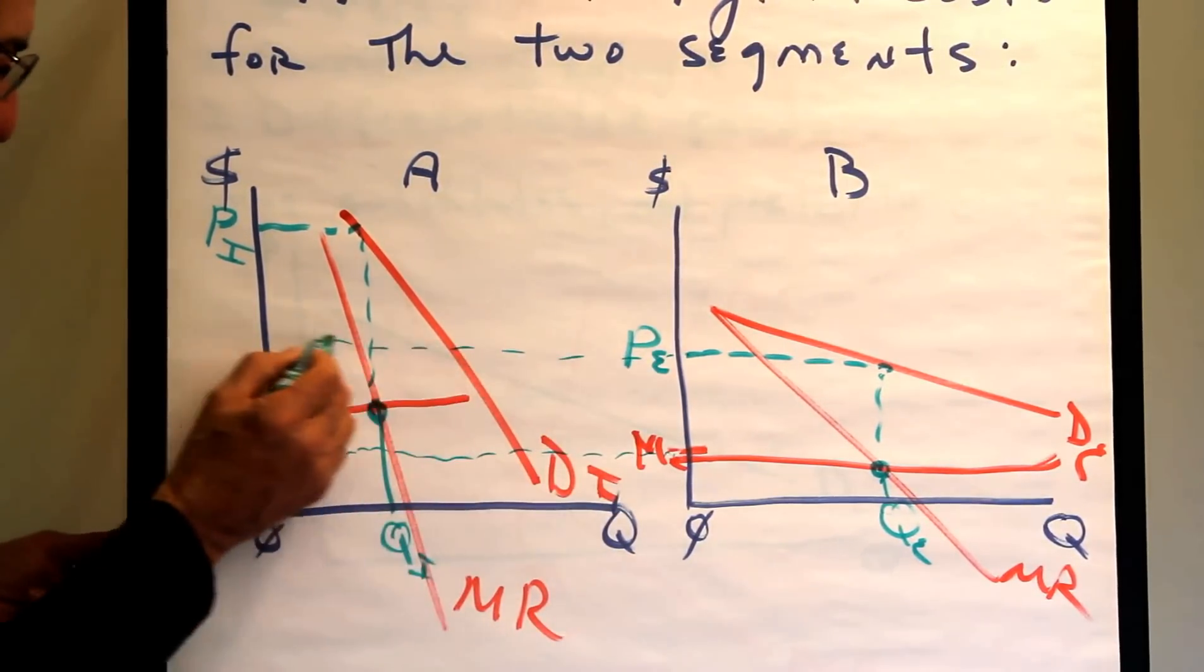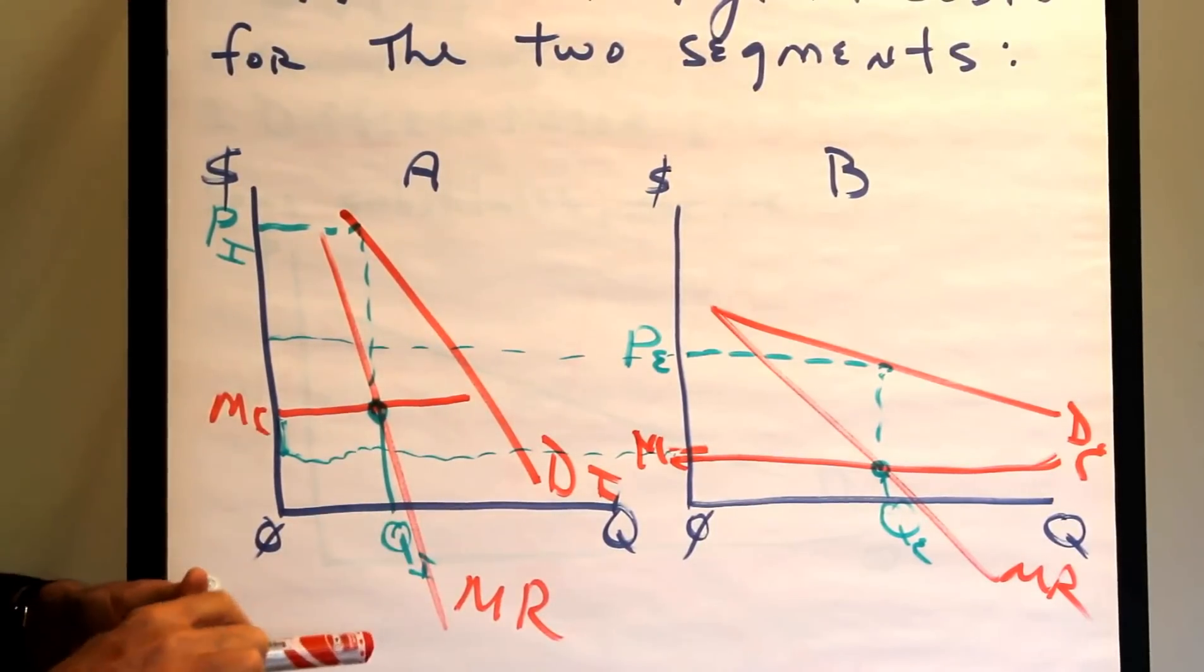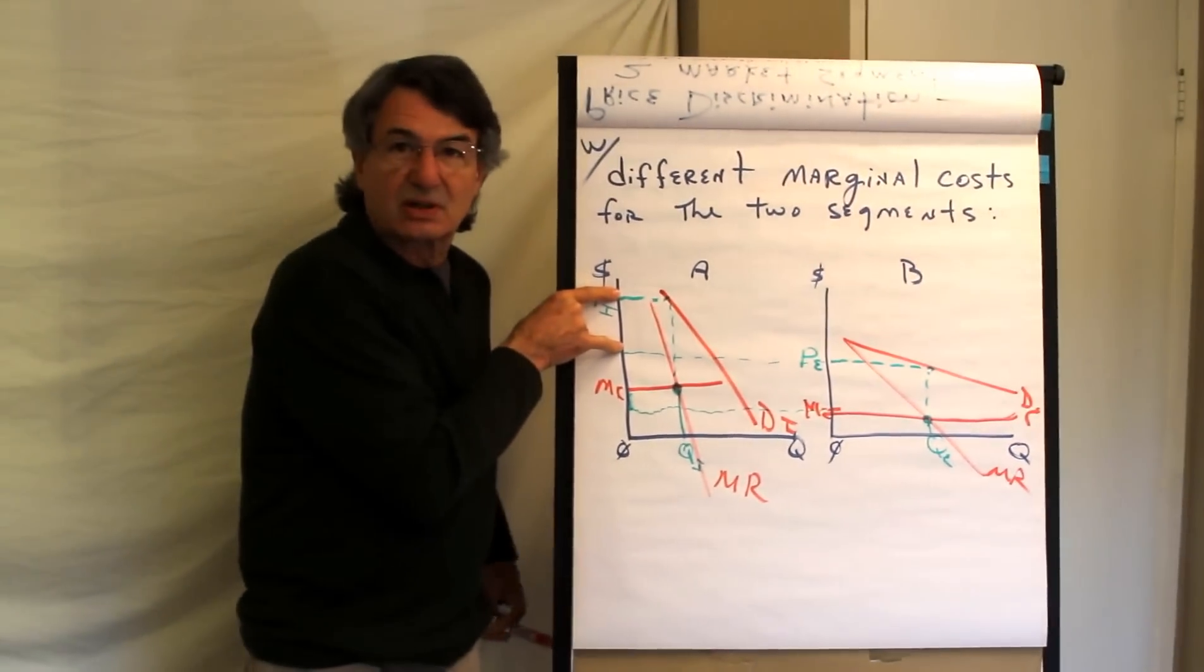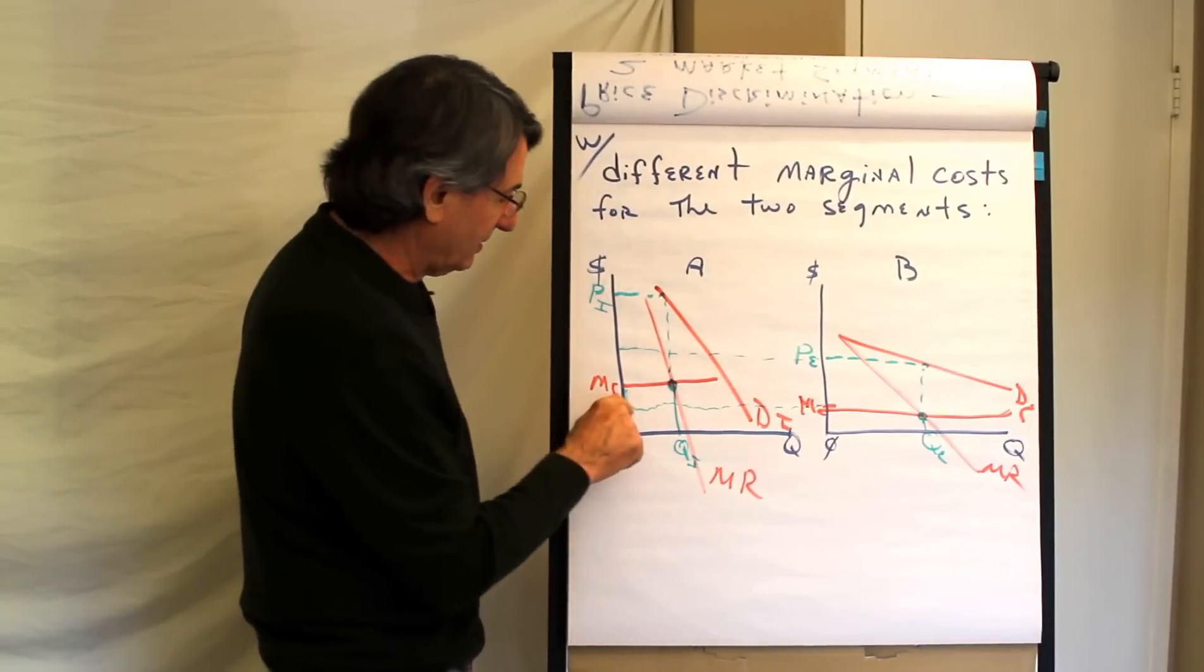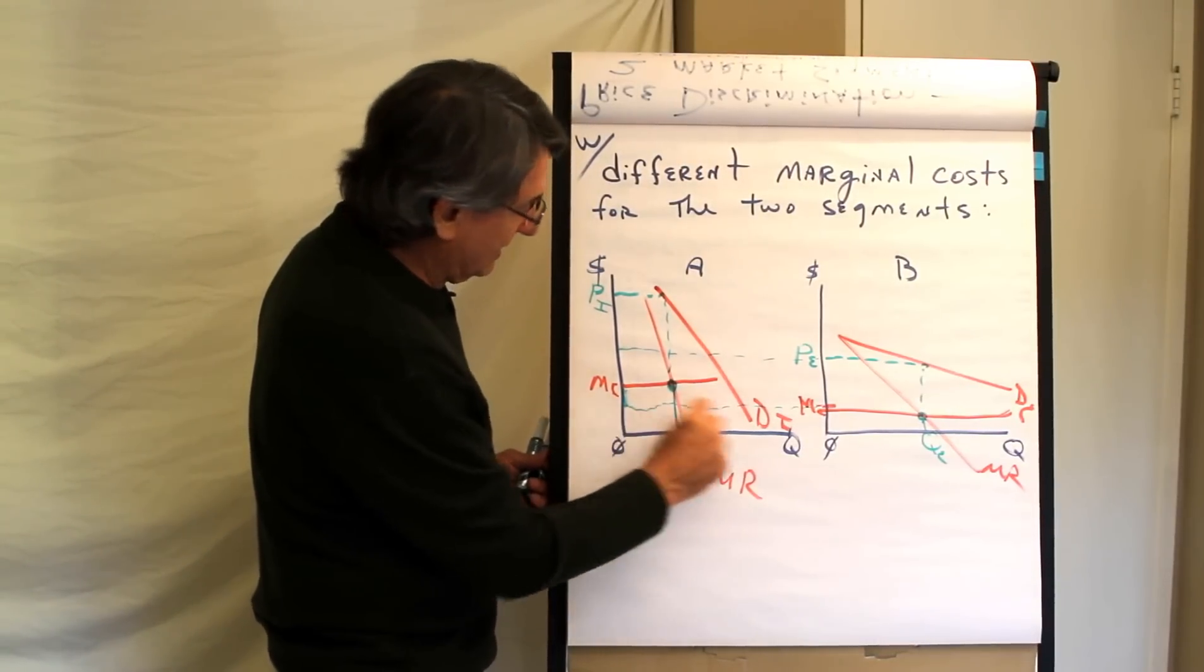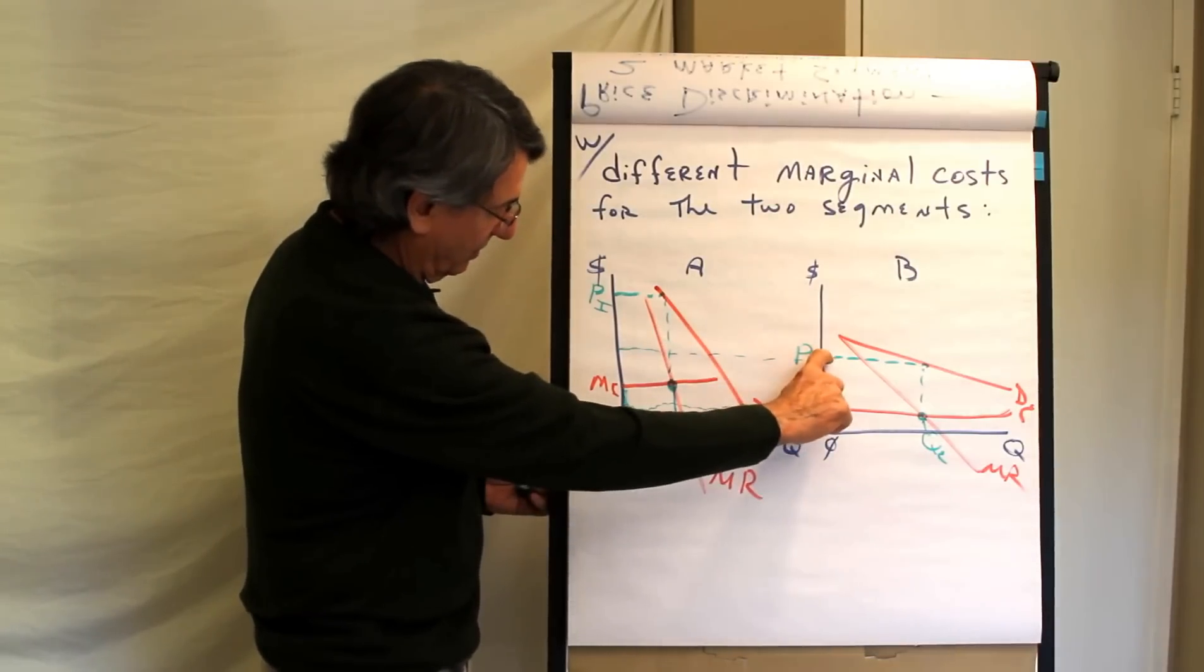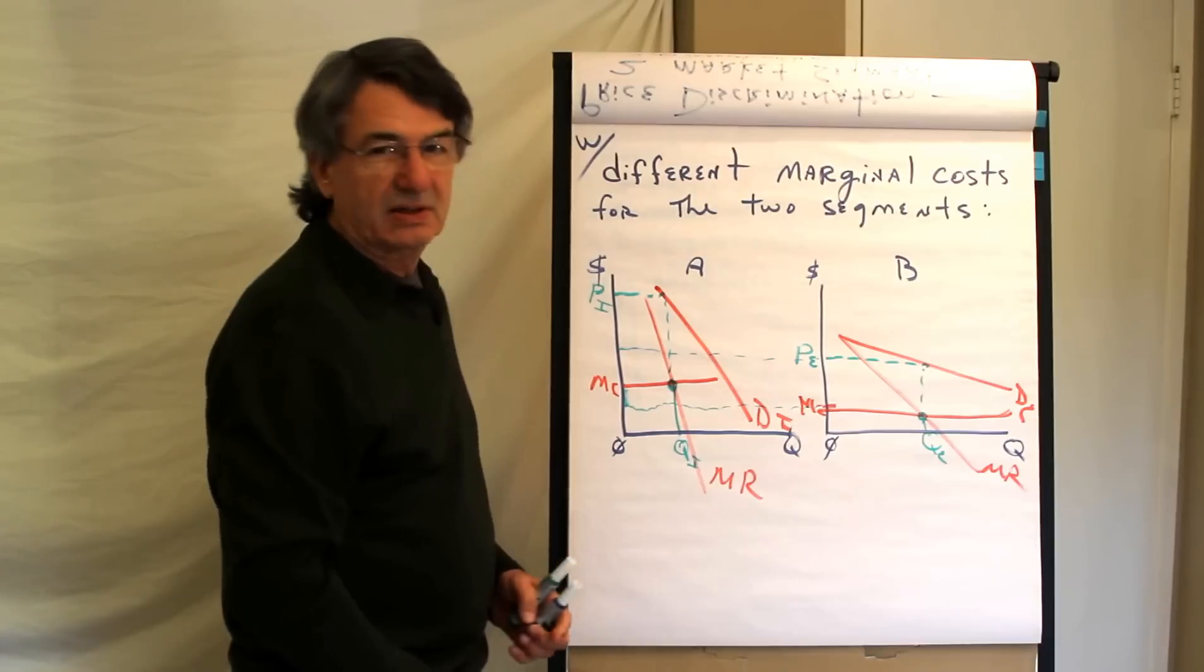So this is price discrimination because price discrimination is selling same service to different groups at prices that don't justify the cost differences. So in this case, the cost difference is only that much. But the price difference is much more substantial than that. So this is another type of price discrimination.